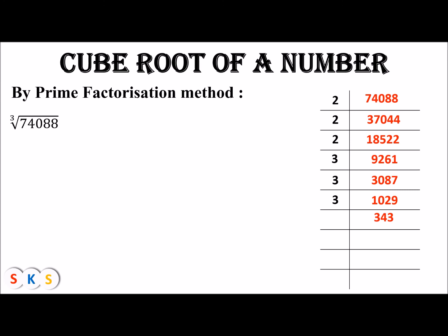We move to the next prime number, seven. When we divide 343 by seven we get 49. Dividing 49 by seven gives seven, and dividing seven by seven gives one. We have now found all the prime factors of 74,088.